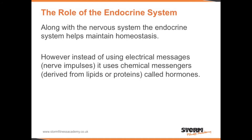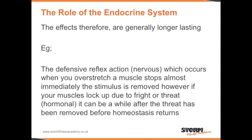The role of the endocrine system: along with the nervous system, the endocrine system helps maintain homeostasis. However, instead of using electrical messages, it uses chemical messengers called hormones. The effects are therefore generally longer lasting with the endocrine system. For example, the defensive reflex action which occurs when you overstretch your muscle stops almost immediately when the stimulus is removed. However, if your muscles lock up due to fright or threat, it can be a while after the threat has been removed before homeostasis returns.